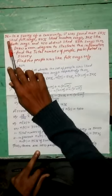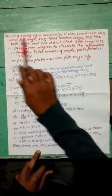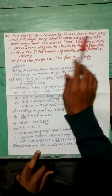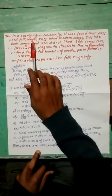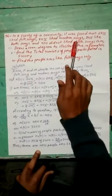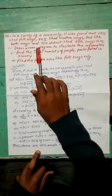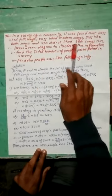Question number 13. In a survey of a community, it was found that 65% liked fox song, 50% liked modern song, 30% liked both songs, and 450 did not like both songs.